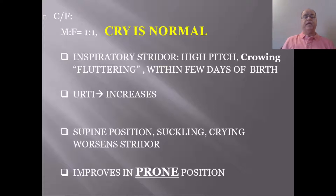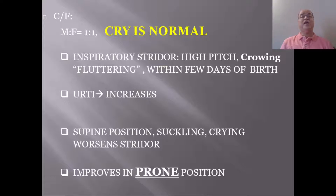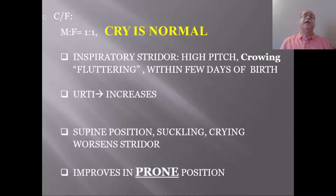The disease occurs equally in male and female children. An important differentiating feature is that cry is normal in such babies, because the disease involves the supraglottic region and the vocal cords are spared. This differentiates it from pathologies involving the glottis — such as vocal cord paralysis, polyp, or cyst — in which the cry would be abnormal. The stridor is inspiratory, high-pitched, and fluttering, appearing within a few days of birth. Upper respiratory tract infections worsen it.